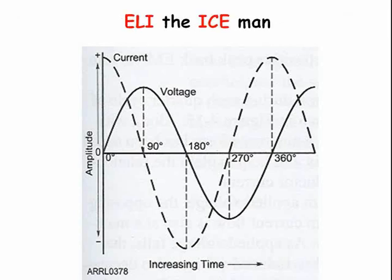Here is a handy way to remember what leads what in an inductor and a capacitor. L stands for inductor, C for capacitor, E for voltage, I for current. Let's read from left to right: ELI the ICEman. ELI — voltage leads current in an inductor. ICE — current leads voltage in a capacitor.